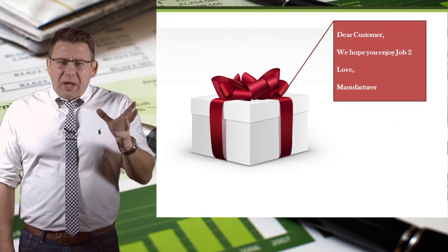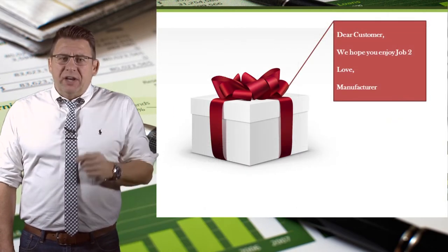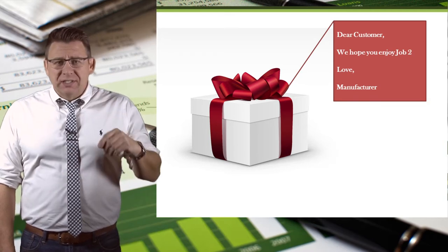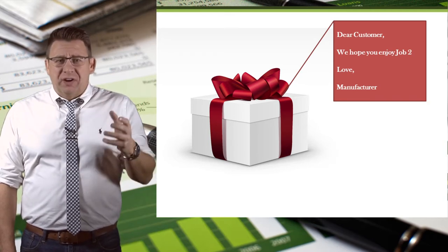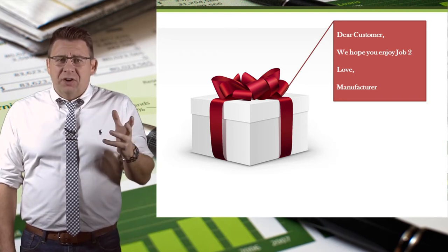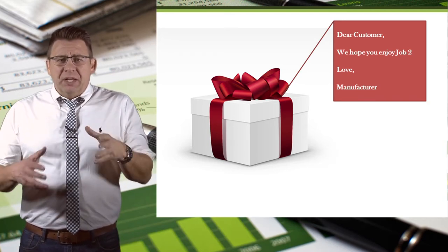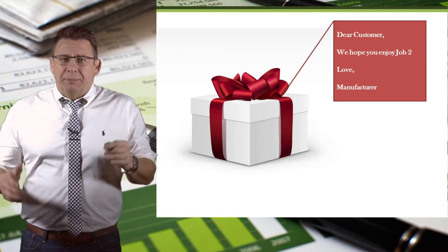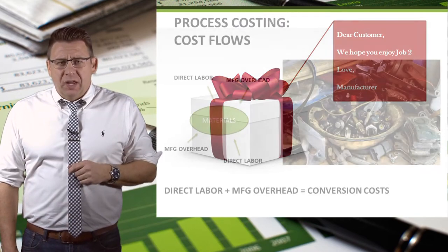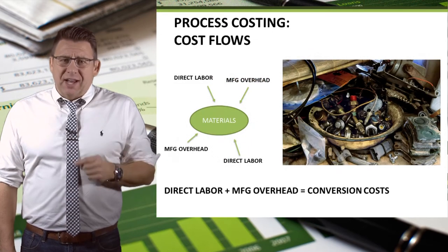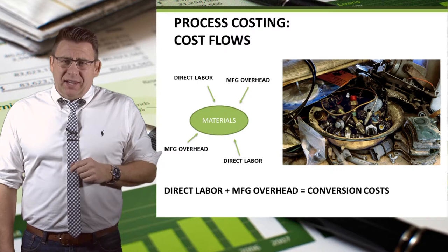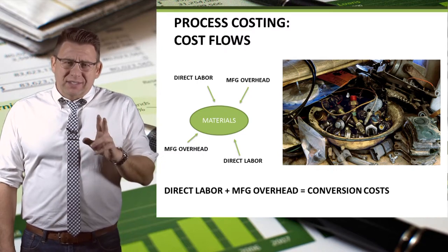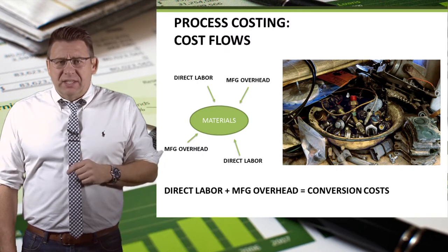So job costing is very neat. We take materials, apply labor and overhead, and deliver completed products to our customers all wrapped up in a nice neat package. Process costing, in contrast, is kind of messy.